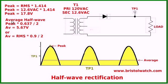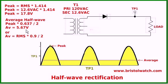If you want the average for a half-wave, the average is the power that's really equivalent to DC as far as power transfer. There are essentially two formulas for it: peak times 0.637 divided by 2, which gives 5.67 volts. Or the other formula is RMS times 0.9 divided by 2.